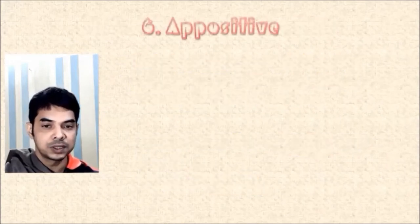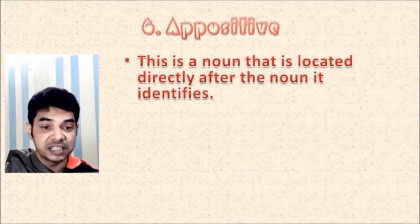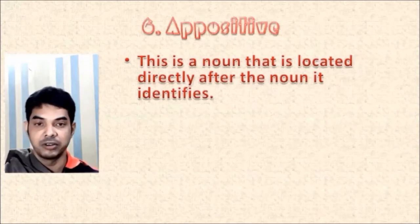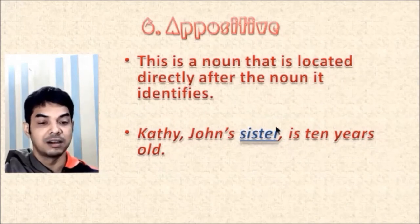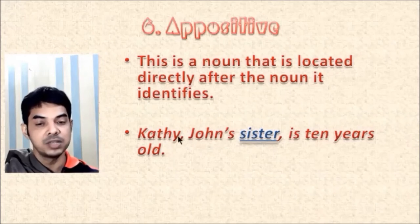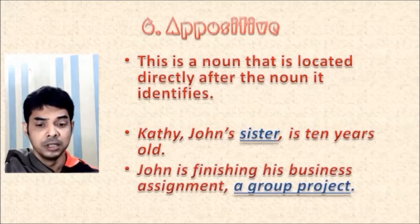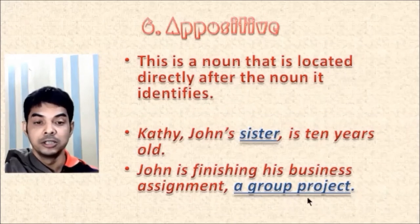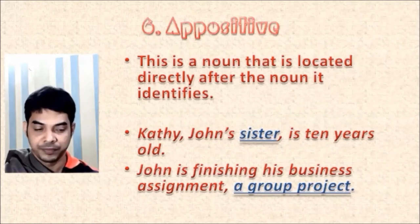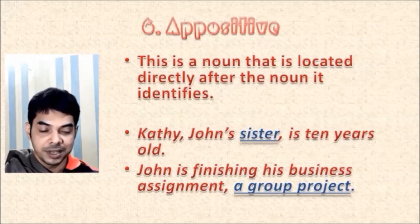Then comes the sixth rule: appositive. An appositive is a noun located directly after the noun it identifies. Example: 'Kathy, John's sister, is 10 years old.' 'John's sister' stands just after 'Kathy,' identifying who Kathy is — so it's an appositive, and for an appositive we use a noun. Another example: 'John is finishing his business assignment, a group project.' What is the business assignment? It's a group project. 'A group project' identifies the noun 'business assignment' placed immediately before it. So it's an appositive, and for an appositive we always use a noun.